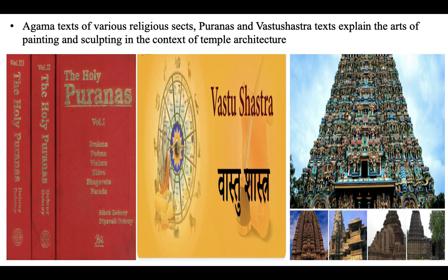Agama texts — traditional texts of various religious sects — along with Puranas and Vastu Shastra (the science of architecture) explain the art of painting and sculpting in the context of temple architecture. Through these texts, we learn more about Indian art, painting, and sculpting. They show how India gave great importance to all these various art forms, even recording them in books in those ancient days.